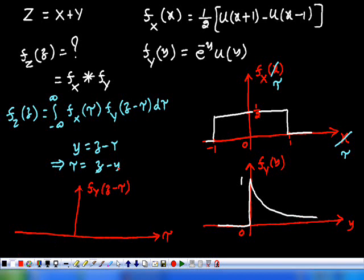When y = 0, τ = z, and f_Y = 1, so the value at τ = z is 1. When y = 1, τ = z - 1, so between τ = z and τ = z - 1, the function decays. When y = 2, τ = z - 2. When y = -1, τ = z + 1, where f_Y = 0. So between z - 1 and z, the function decays exponentially. We have reversed and shifted the function.